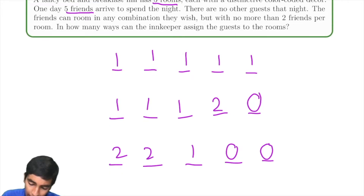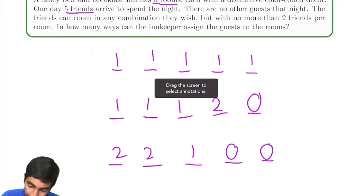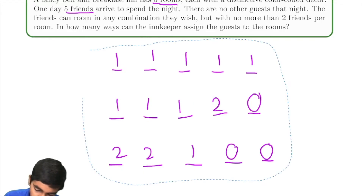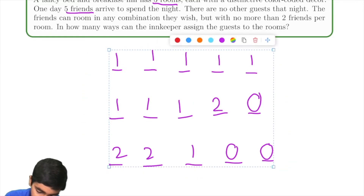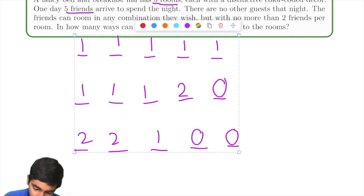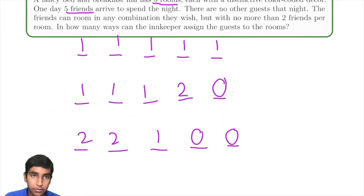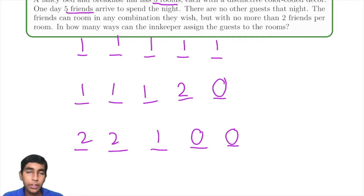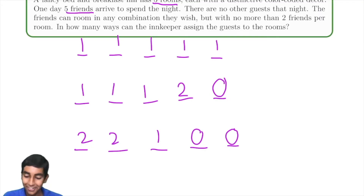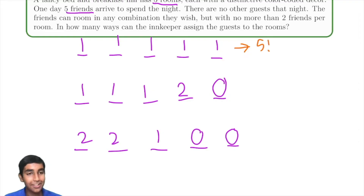Now let's look at each case separately and count the number of ways it's possible. Starting with the first case — they all have their own room. There are five rooms and five people, so there are 5! ways to arrange them. That was one of the easier cases.